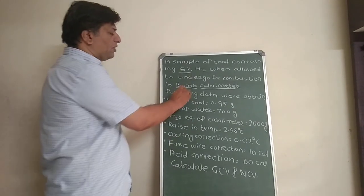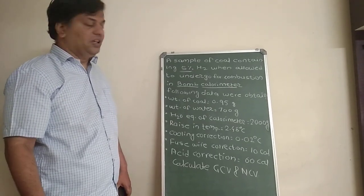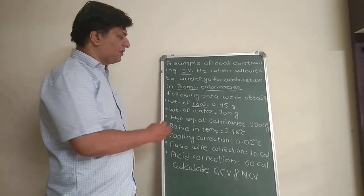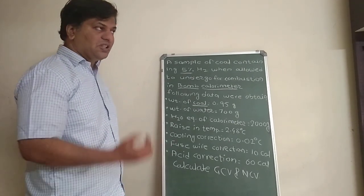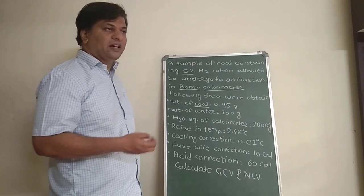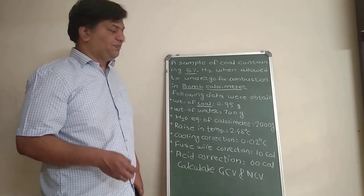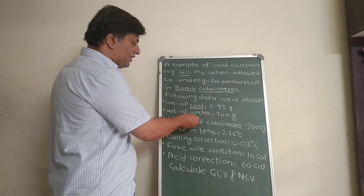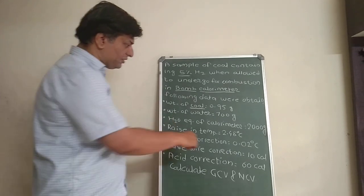The bomb calorimeter is used for determining the calorific value of solid fuels. Here the solid fuel is coal, and they have given us the quantity. They performed the experiment where this coal is burned, and we can see that this data is obtained. Once we start the experiment, the temperature of the water present in the calorimeter rises due to combustion. Also, partially some amount of energy is absorbed by the calorimeter. First, they have given the weight of coal sample taken, then the weight of water — that is 700 grams — taken in the calorimeter, and the water equivalent of calorimeter, which is 2000 grams.